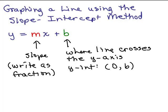In this video, we're going to go over how to graph a line using the slope-intercept method. Lines in the form y equals mx plus b, where it's solved for y, the coefficient of x is the slope, so m is the slope. We'll write that as a fraction. And b is the place where the line crosses the y-axis, so the y-intercept is actually the point (0, b).